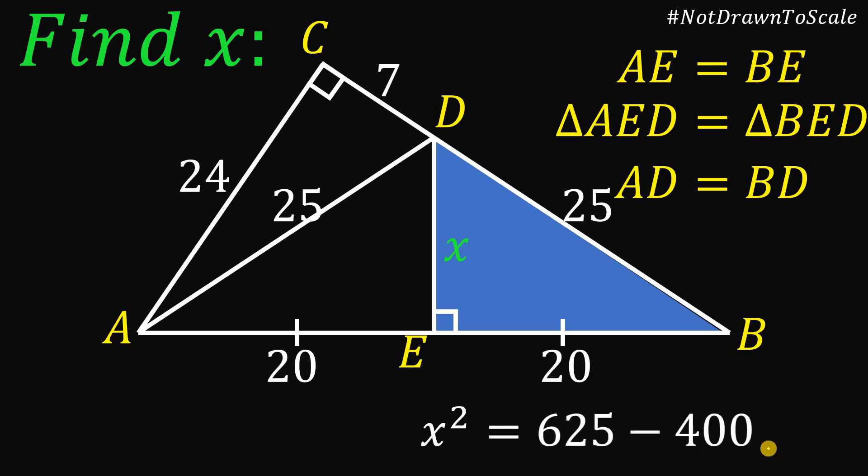And 625 minus 400, this is just 225. So to solve for the value of X, let's get the square root on both sides. And square root of 225 is simply equal to 15. And that is the value of this side, X, or side DE.